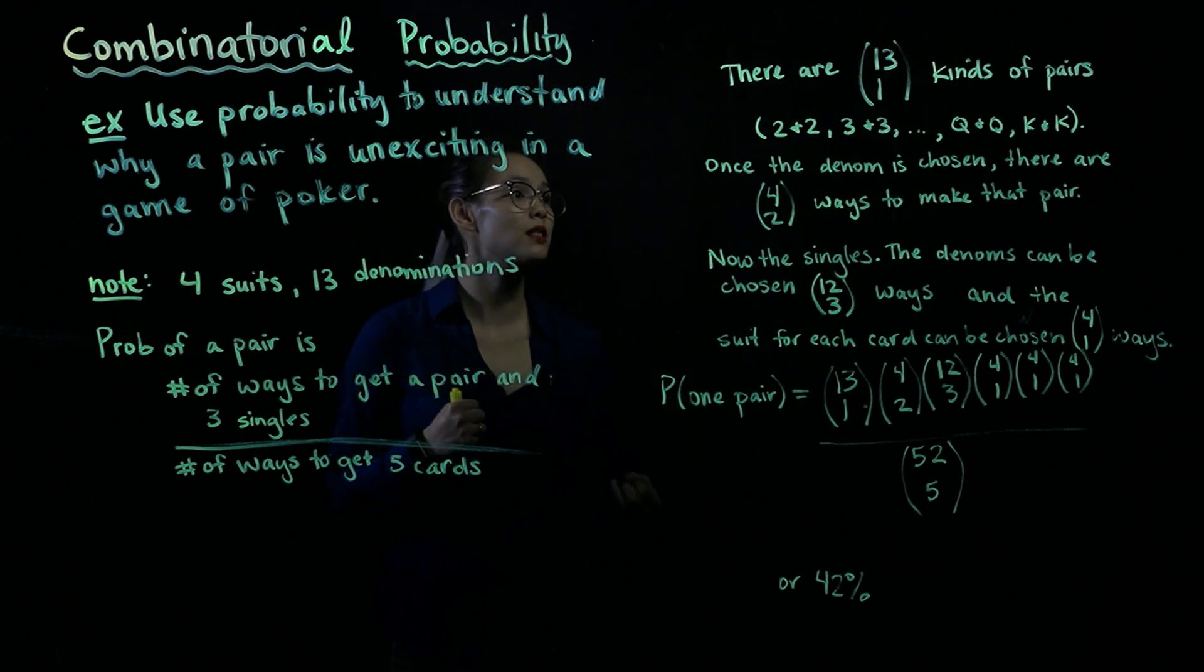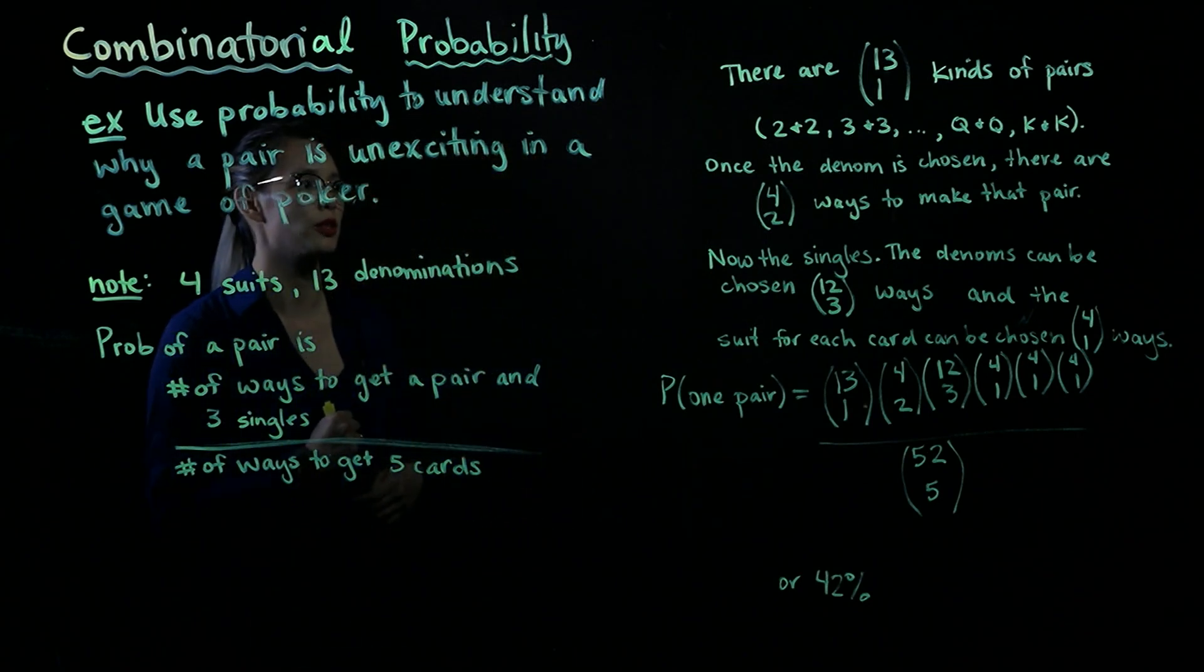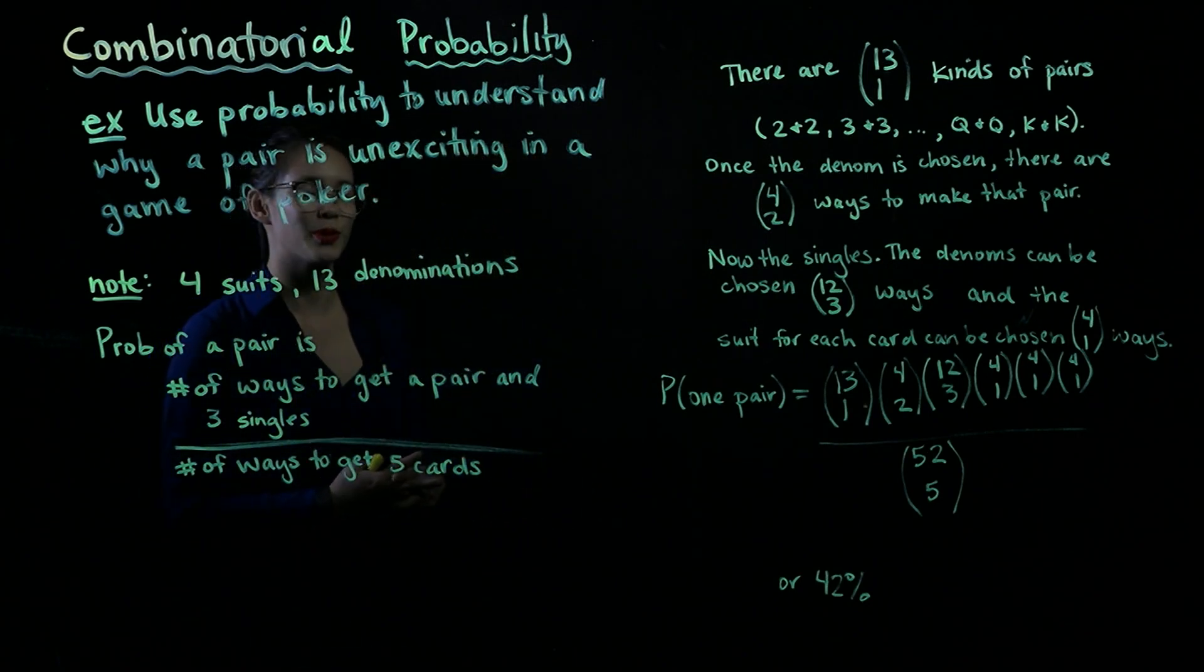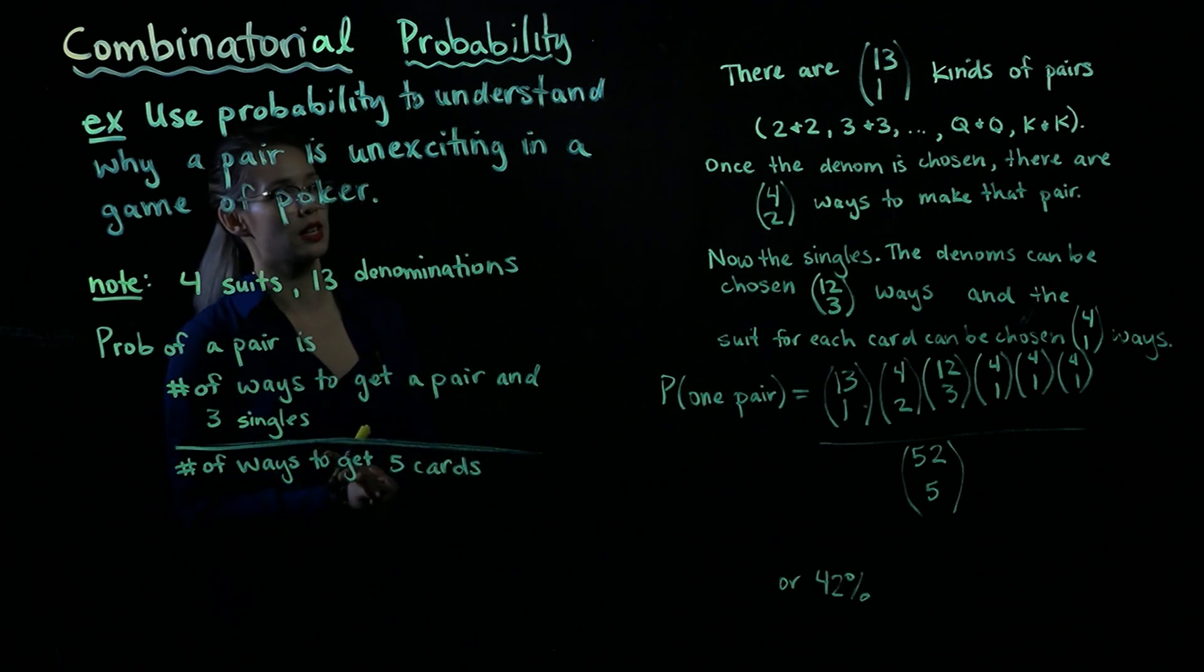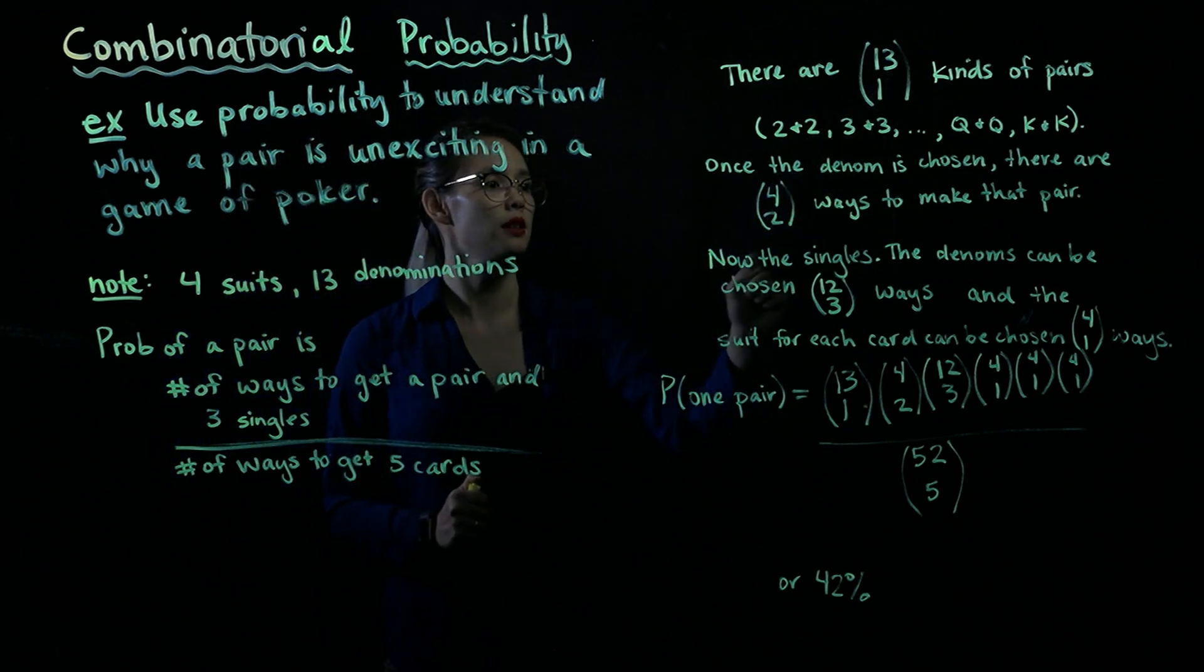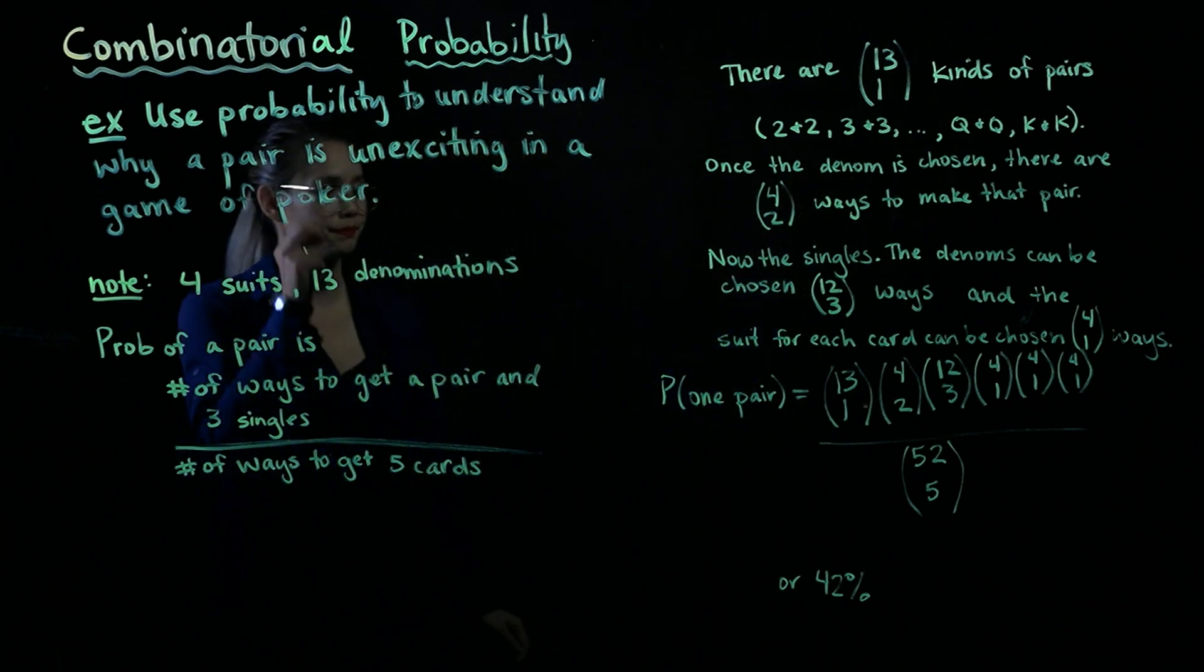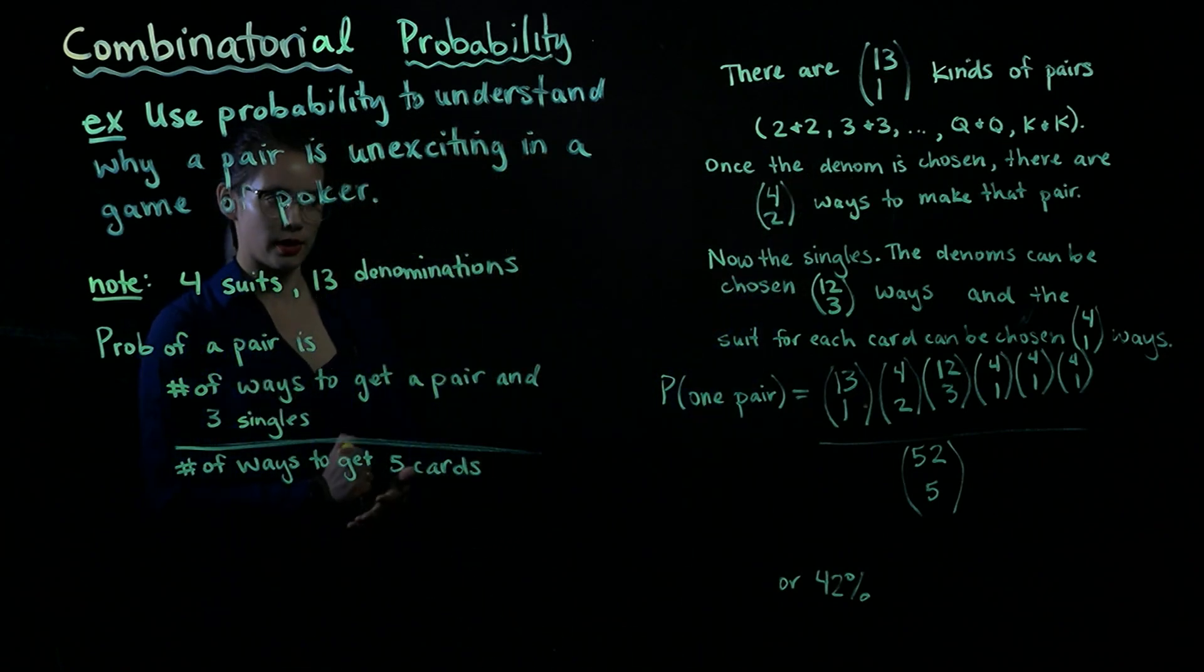Once the denomination is chosen, like if we choose twos, then there are 4 choose 2 ways to make that pair. So the pairs part of this is all worked out. There are 13 choose 1 kinds of pairs and then there are 4 choose 2 ways to make any given type of pair.